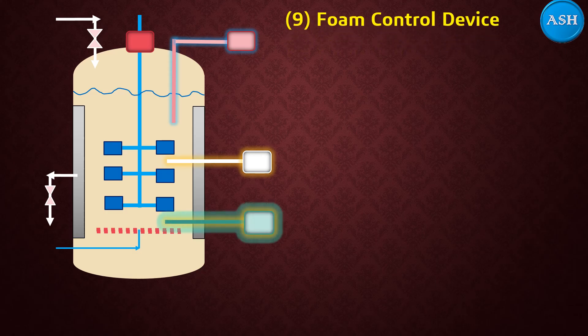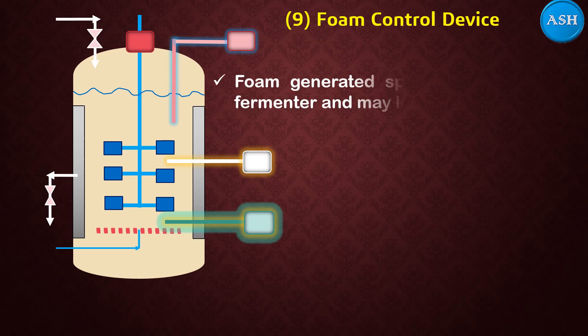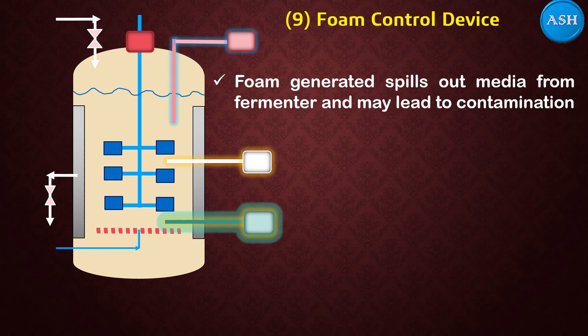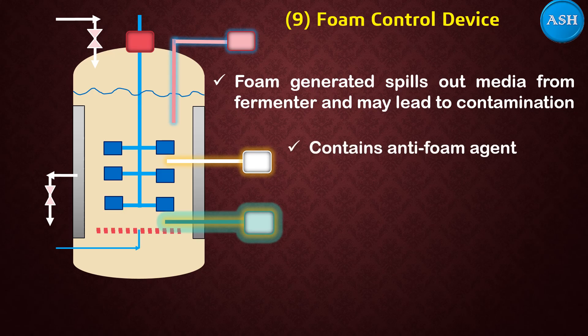The ninth major part is the foam control device. During the mixing or fermentation process, there is a high chance that excess foam is generated inside the fermenter. That foam may spill out from the fermenter along with the media, and it may also lead to contamination. To avoid spilling of media and contamination, an anti-foaming agent is used.